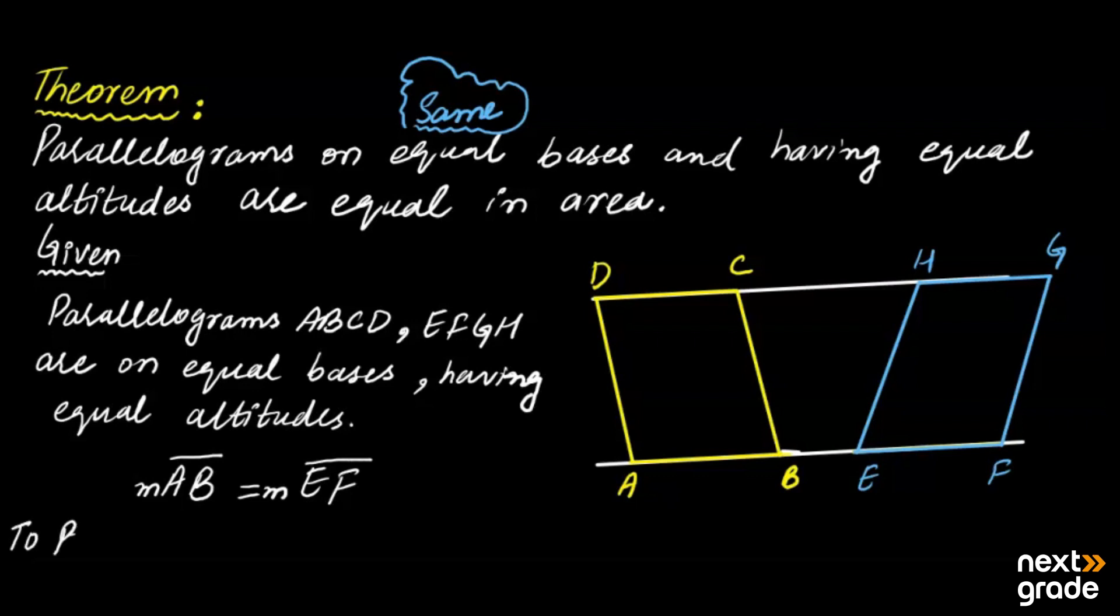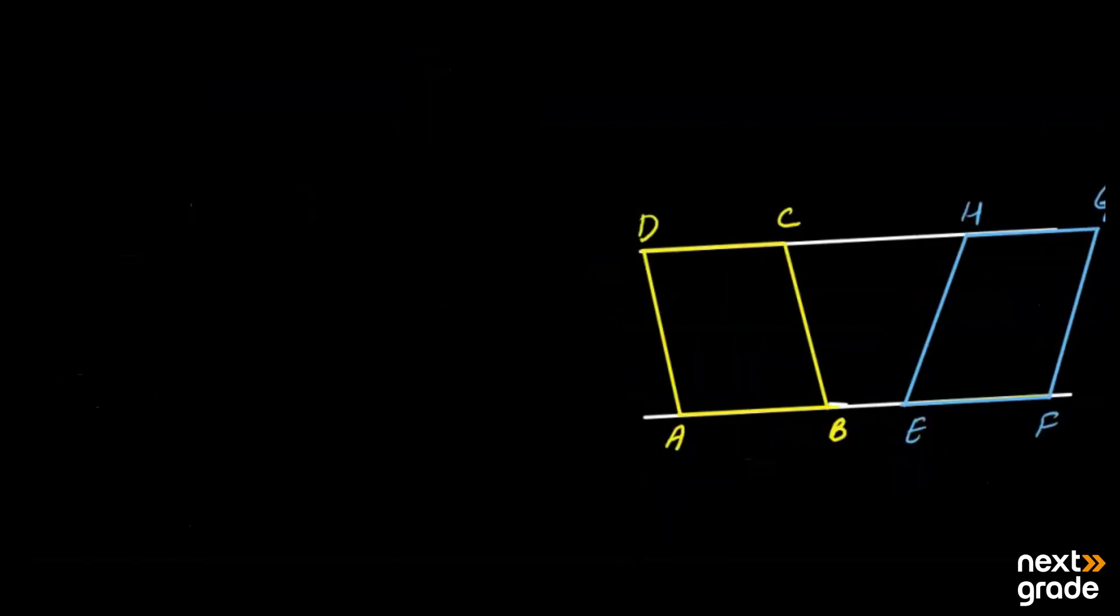So what do we have to prove? ABCD which should be equal to EFGH. This theorem to prove here we have to do construction.